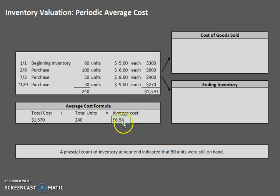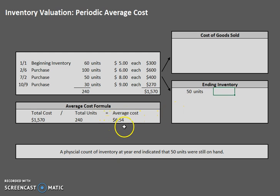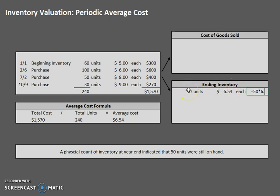Now let's apply this, starting with ending inventory. We know that we have 50 units in ending inventory, but what was the cost of those 50 units? Under the average cost method we use the average cost we just calculated — $6.54. So we're going to use that: 50 units times $6.54 gives us $327.